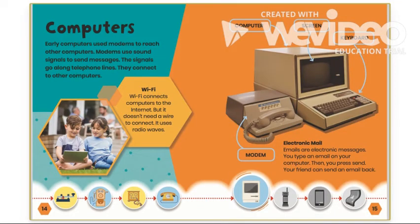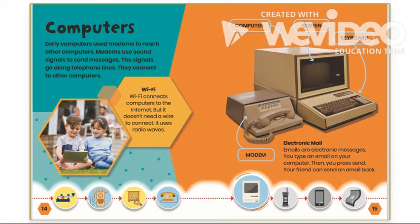Computers: Early computers used modems to reach other computers. Modems used sound signals to send messages. The signals go along telephone lines and connect to other computers. Wi-Fi connects computers to the internet, but it doesn't need a wire — it uses radio waves. Let's look at this computer. Does it look like a computer you might use today? No — this is an older type of computer.